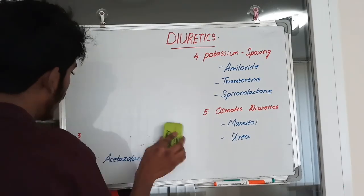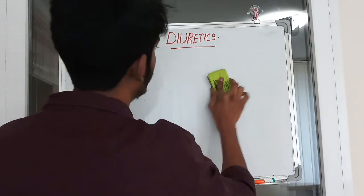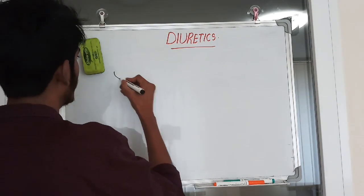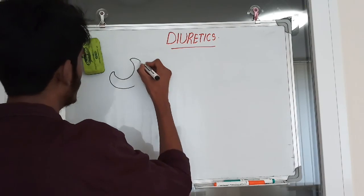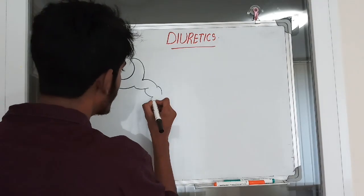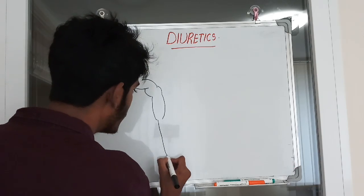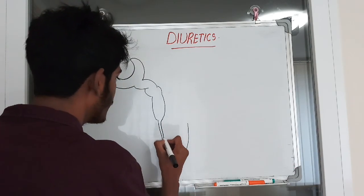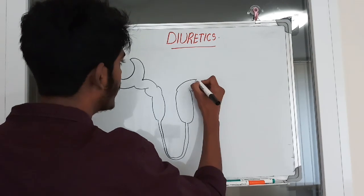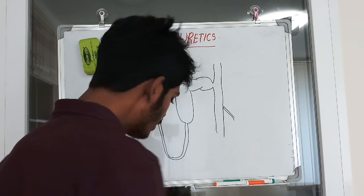Before going into that, I should explain how water is reabsorbed — water majorly follows sodium. So we'll draw our nephron: Bowman's capsule, proximal convoluted tubule, thick descending limb of loop of Henle, thin descending and ascending loop of Henle, thick ascending limb of loop of Henle.